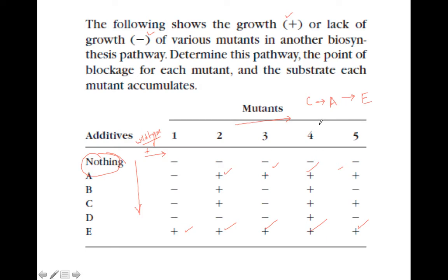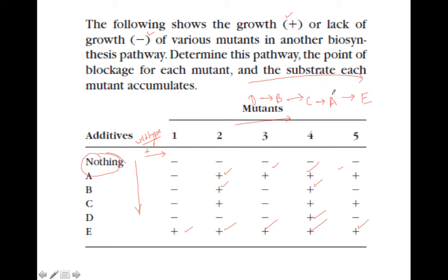Now let's see where we get 2 pluses — that is B. So B is just ahead of C. And if we see 1 plus, it is only D, so D would be possibly the first one in the system. Our biochemical pathway runs from D → B → C → A → E.